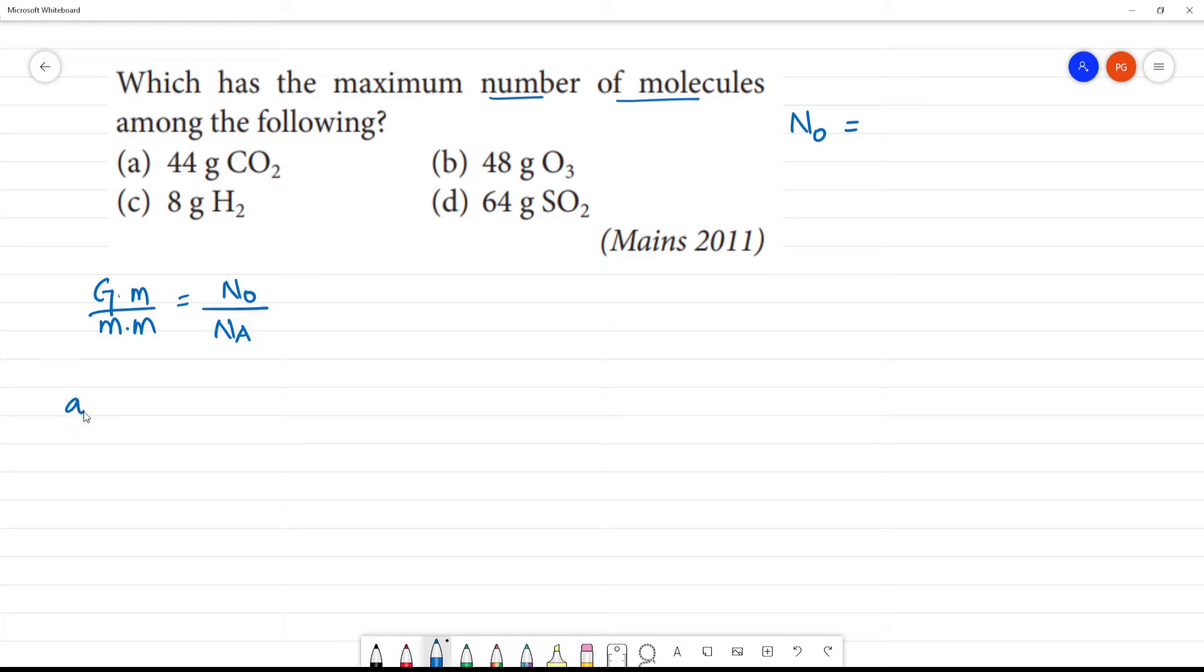We can substitute option A: 44 grams of carbon dioxide. Calculate the molecular mass of CO₂. Carbon is 12, oxygen is 2 times 16. This equals 12 plus 32, which is 44.